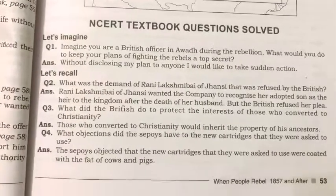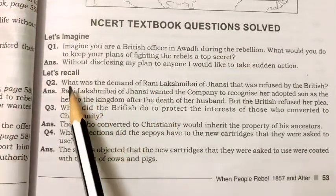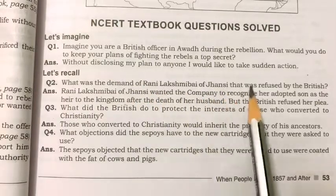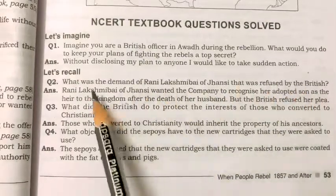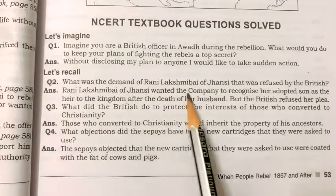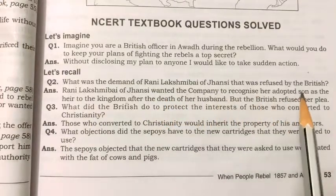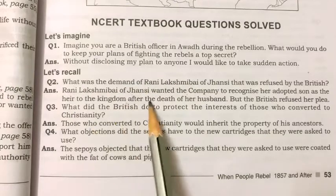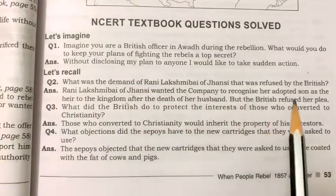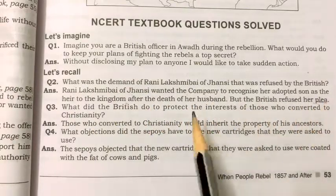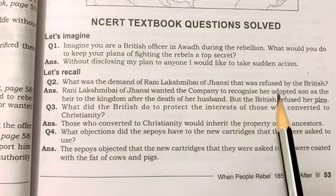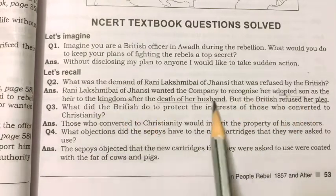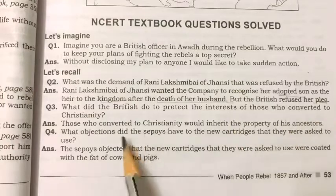Now Chapter 5 question and answers. What was the demand of Rani Lakshmi Bai of Jhansi that was refused by the British? Rani Lakshmi Bai wanted the company to recognize her adopted son as the heir to the kingdom after the death of her husband, but the British refused this plea.